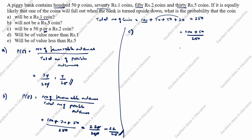So 150 divided by 250 — cancel the zeros. 3 fives are 15, 5 fives are 25, so the answer is 3 by 5. P(E) equals 3 by 5.